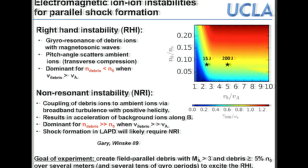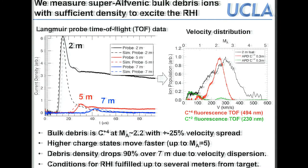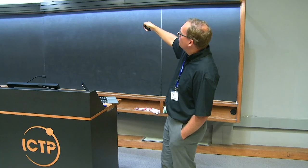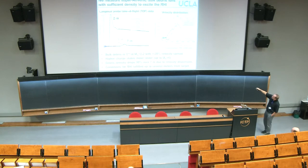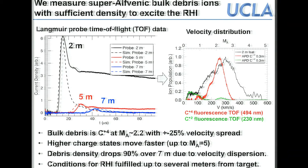The current goal is to create a field-parallel debris cloud that is super-Alfvénic, travels through the LAPD over several meters, and is dense enough to excite the RHI. Later we will try to excite the NRI and observe a shock wave. The debris ions are measured with a Langmuir probe — a conducting tip several meters from the target that collects ion current. The ion current vs. speed spectrum peaks around 300 km/s (Mach ~2.5) with fast ions up to 500–600 km/s.